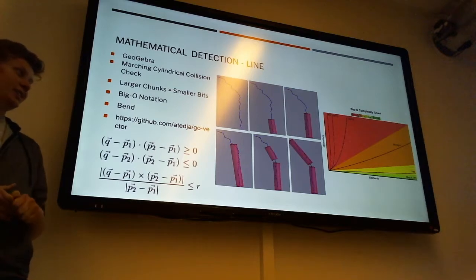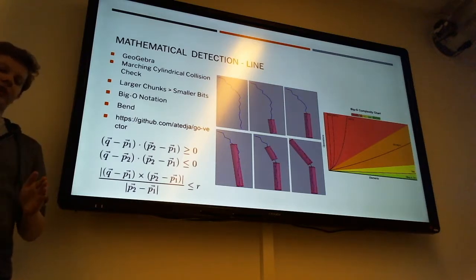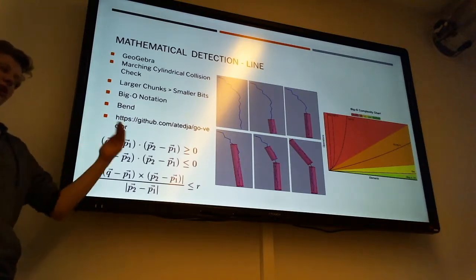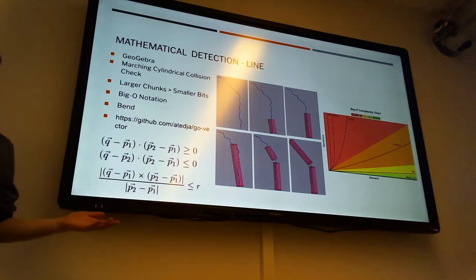So, what happens then is that line gets cut off, and a new marching cylindrical collision test starts, and it goes on until it finds the next problem.